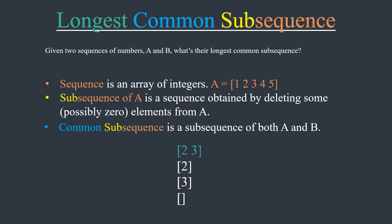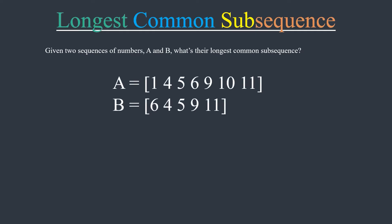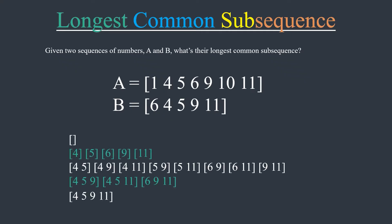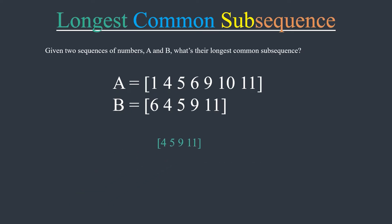For completeness, let's look at another example. Say that we have sequences A and B as shown on the screen. What is the longest common subsequence here? Let's list all common subsequences first. Hopefully I didn't miss some, but you can see that the number of possible subsequences quickly grows. In this example, the longest common subsequence is 4, 5, 9, 11 and its length is 4.